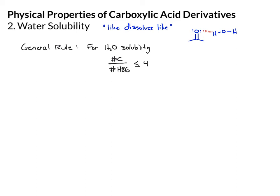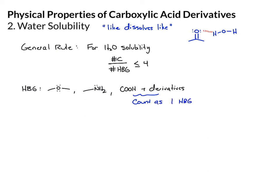So what counts as a hydrogen bonding group? Things we've learned before are things like ethers and amines, but now we are adding in the carboxylic acids and derivatives. One thing to keep in mind: even though some of these will contain more than one oxygen or multiple lone pairs, we still just count these as one hydrogen bonding capable group. Let's look at a couple of examples.